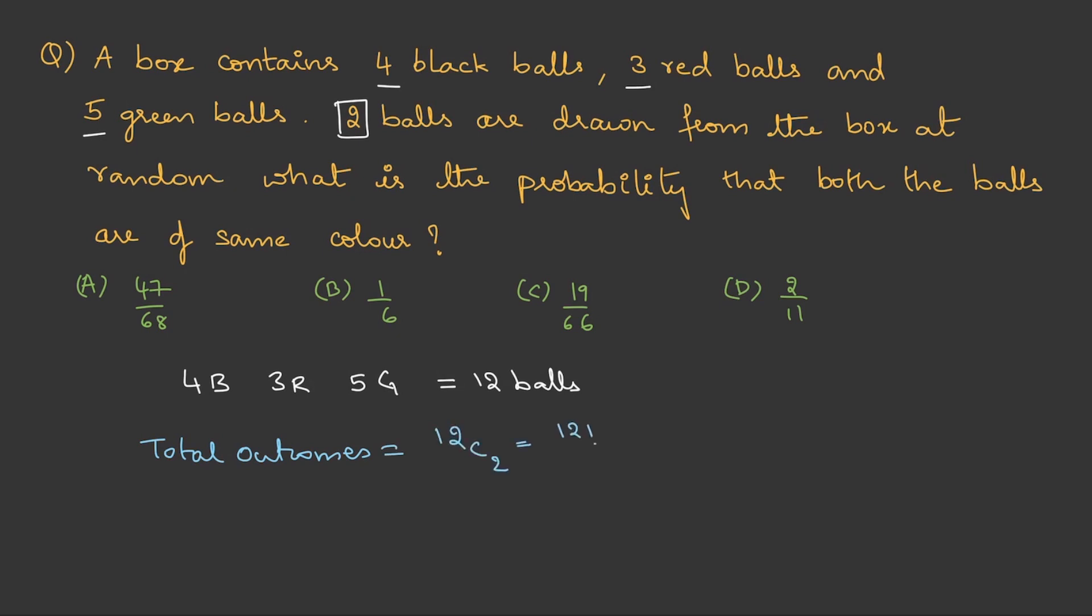So this is 12 factorial by 2 factorial into 10 factorial. This when we solve it turns out to be 66. Next we need to calculate favorable outcomes.